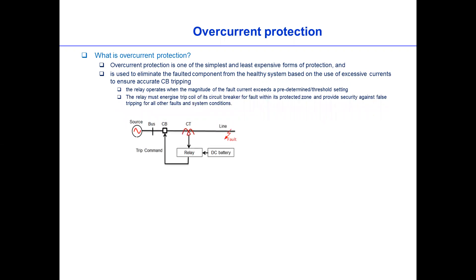This is the single line diagram of how the relay is coordinated in the system. So for example, this is the relay. The relay will take information through the CT or current transformer when there is a fault on the line, and then if the fault current or the information from the CT is higher than the pre-determined setting of the relay, then the relay will initiate a trip command to the circuit breaker and the circuit breaker will disconnect this network from the rest of the network.